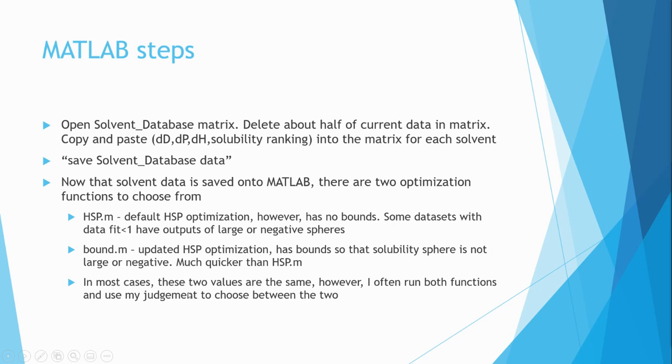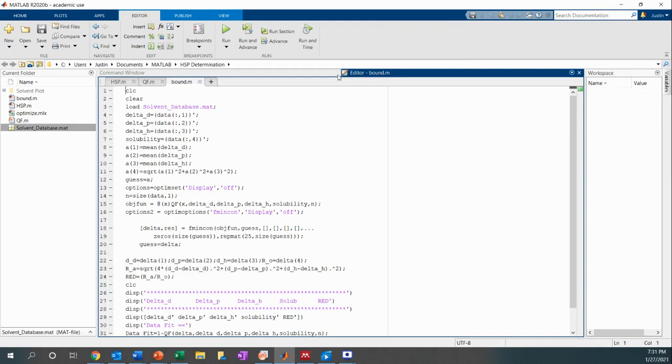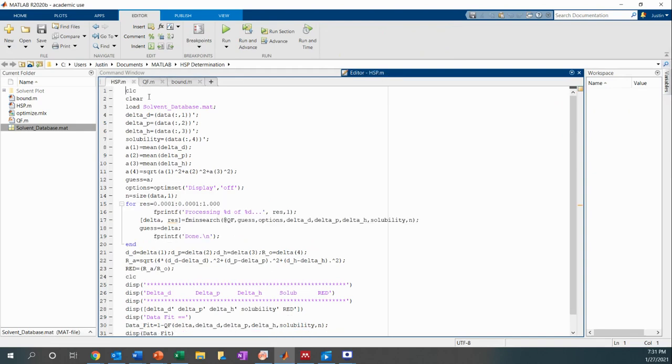In most cases, these two values are exactly the same that I get from HSP and bound. However, I often run both functions and use my judgment to choose between the two if they are slightly different. So now I'm going to pull up MATLAB and just show you how these different algorithms work.